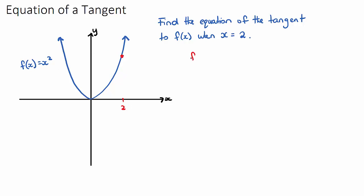So f of 2 will be 2 squared, which is 4. So this is 4 here, and we know this point has the coordinates 2 comma 4.